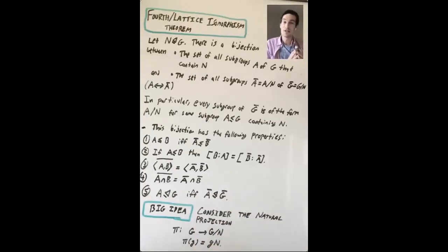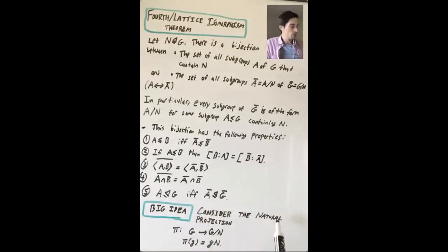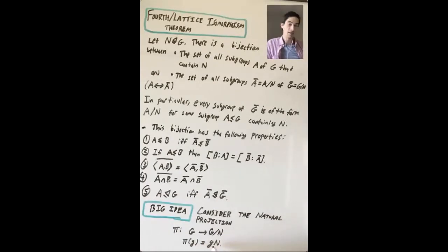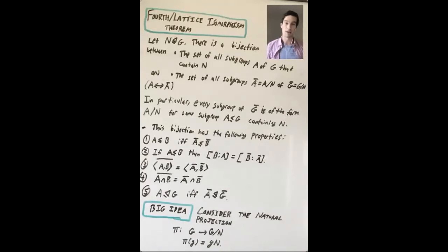I'm not going to do all the details of the proof, but I'll say a little more about it than Dummit and Foote do. The big idea is to consider the natural projection — this special homomorphism from G to G mod N that has N as the kernel — where we take an element g to the left coset of N containing g. So the big idea goes through understanding this natural projection homomorphism.